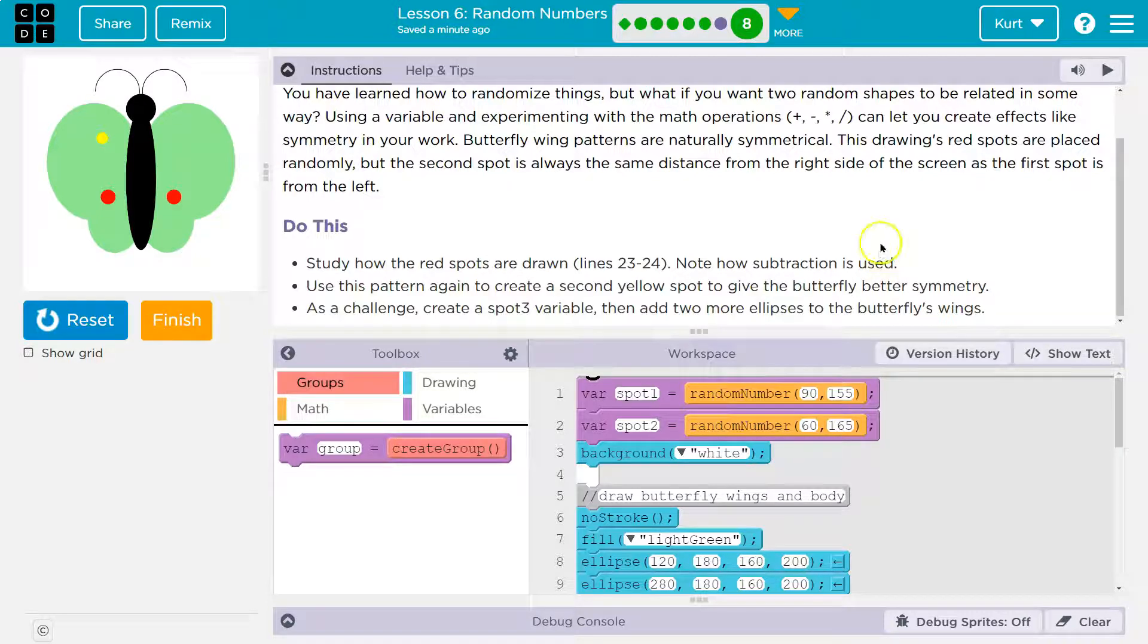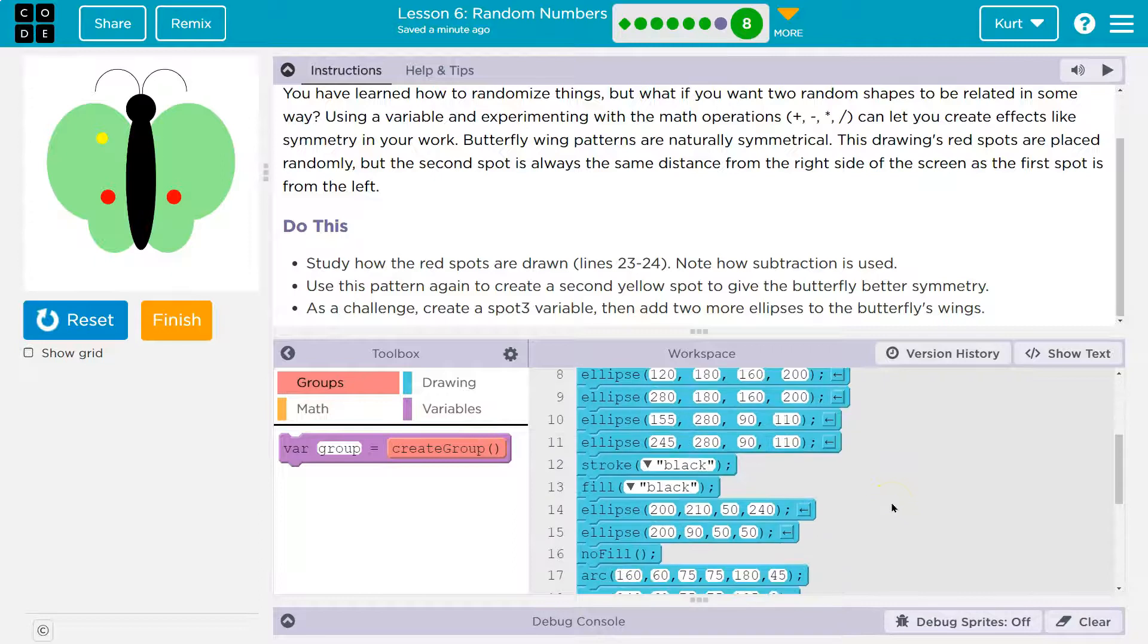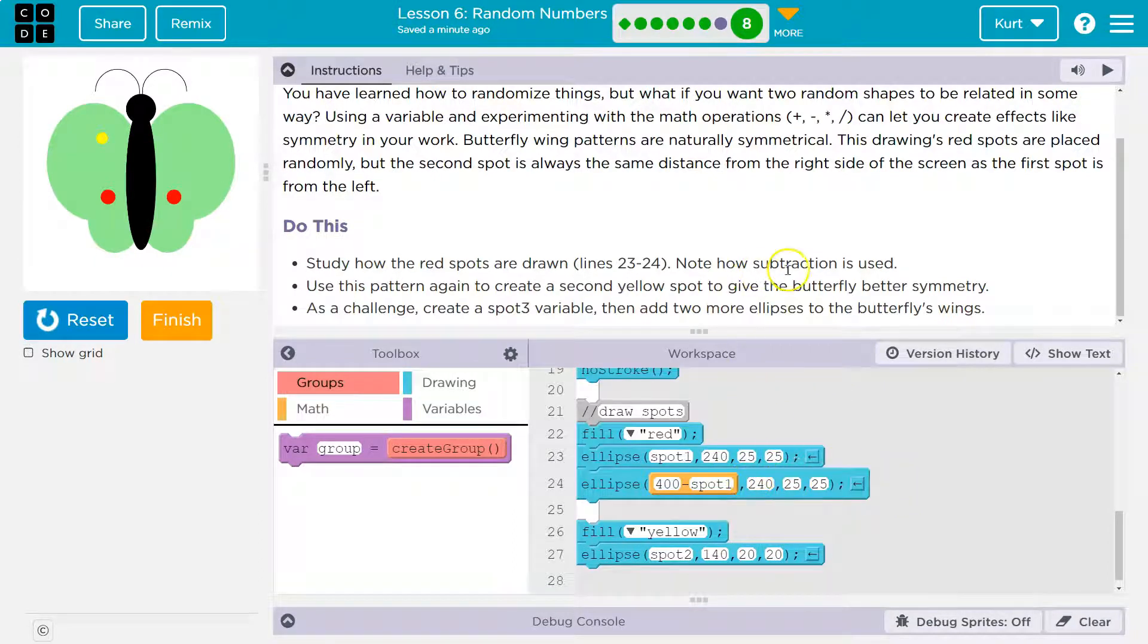Do this. Study how the red spots are drawn, lines 23 through 24. Okay. Note this subtraction is used. Use this pattern again to create a second yellow spot to give the butterfly better symmetry.